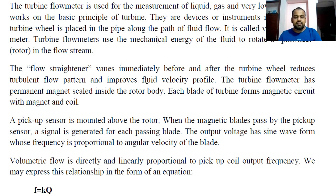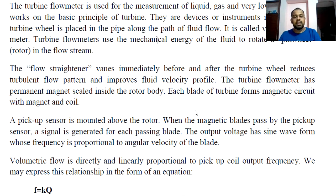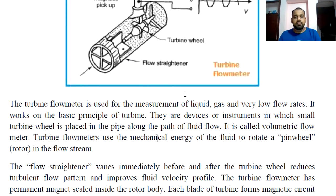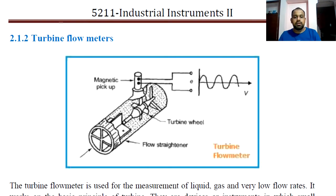The flow straightener vanes immediately before and after the turbine wheel reduce the turbulent flow pattern and improve the fluid velocity profile. The turbine flow meter has a permanent magnet sealed inside the rotor body. Each blade of the turbine forms a magnetic circuit, and the turbine wheel itself is made of magnetic material.